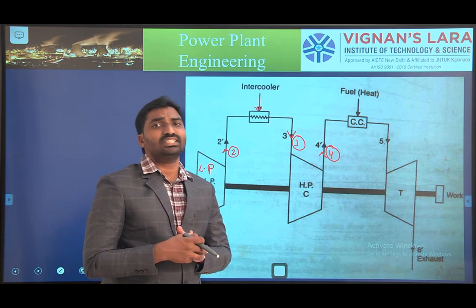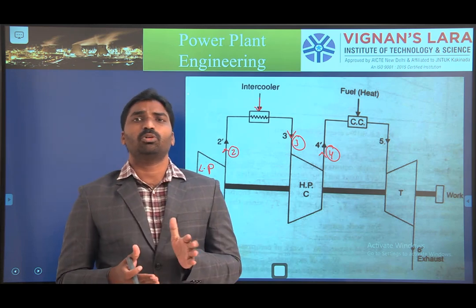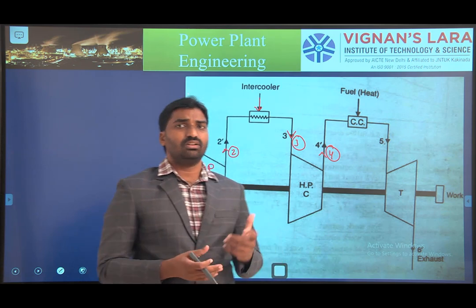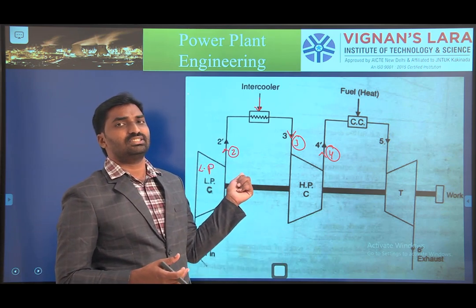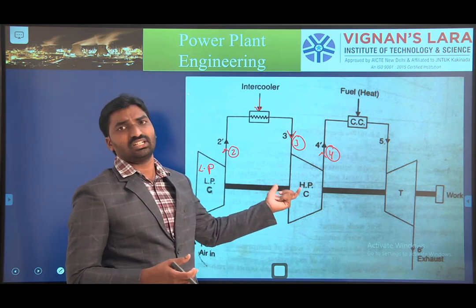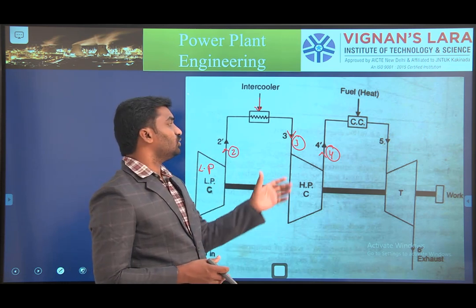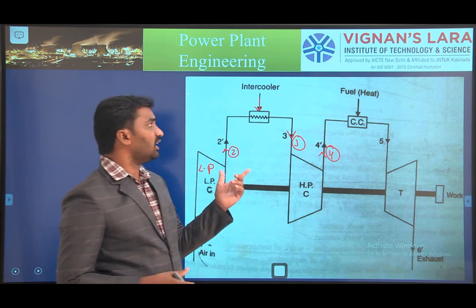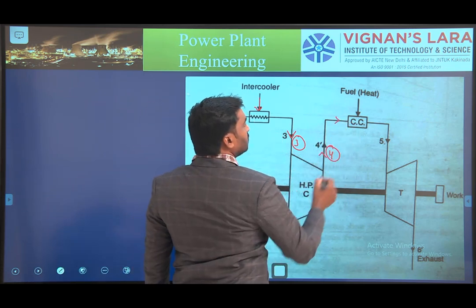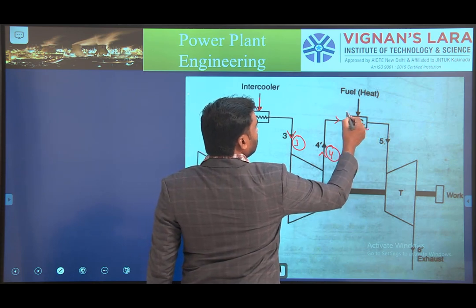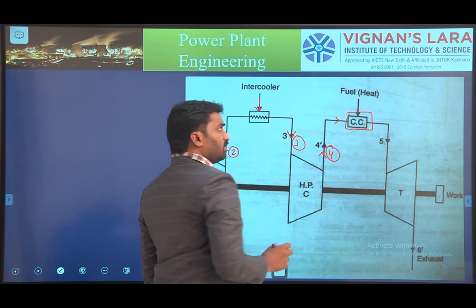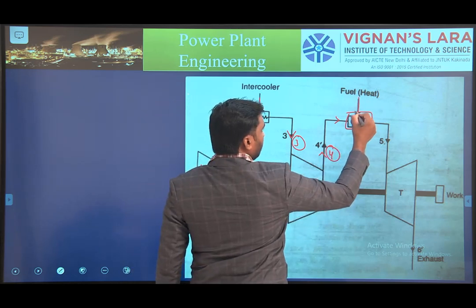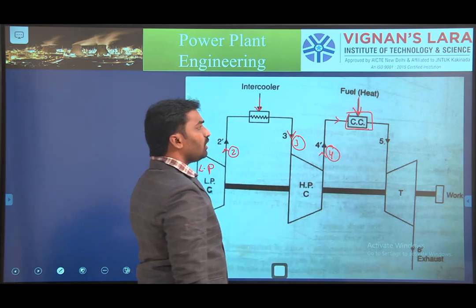The high pressure and high temperature gases from the high pressure compressor are then entered into the combustion chamber. In the combustion chamber, the combustion process takes place, and fuel is injected from another direction into the chamber.